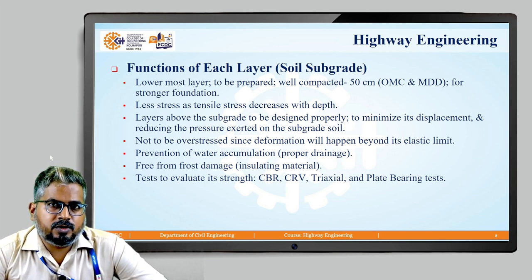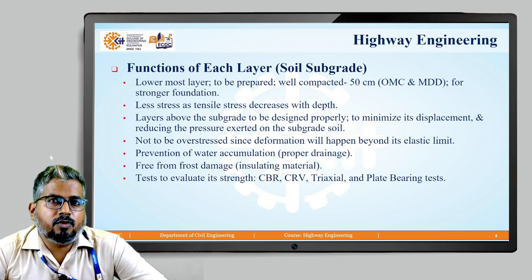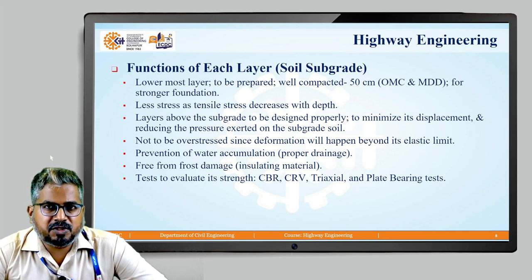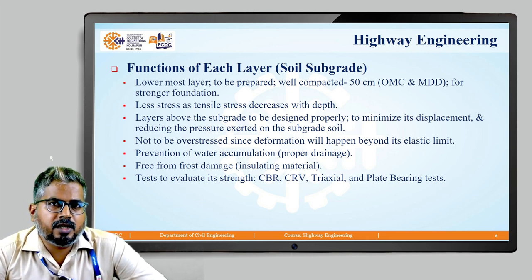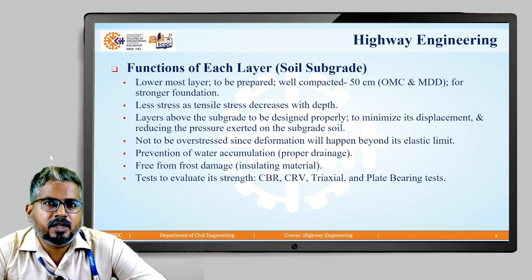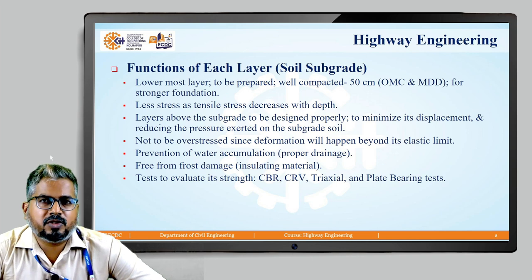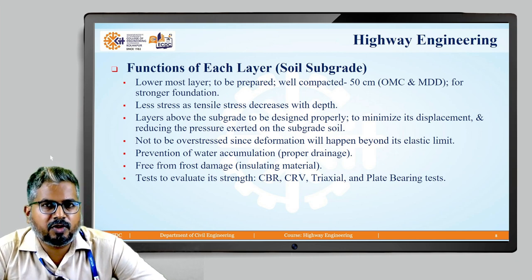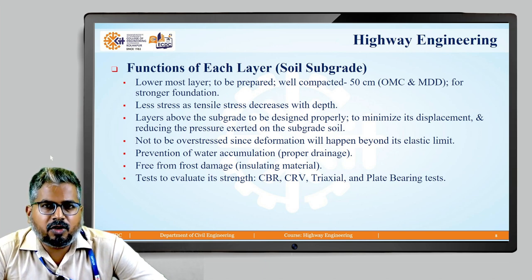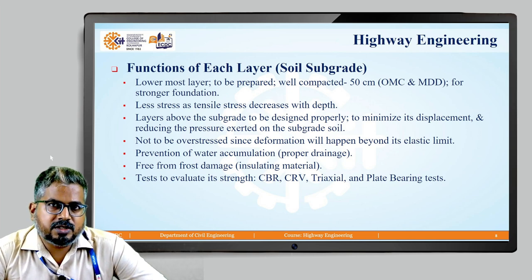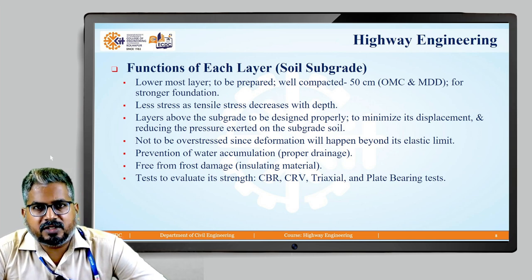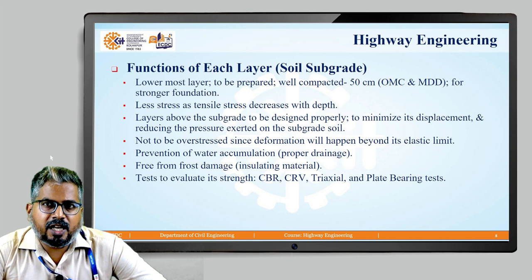Proper drainage conditions must be maintained to prevent water accumulation. Proper insulating material should be provided between the layers to prevent frost damage. Various tests can be performed to measure the strength of the soil subgrade, such as the CBR (California Bearing Ratio) test, CRV (California Resistance Value), and triaxial and plate bearing tests.